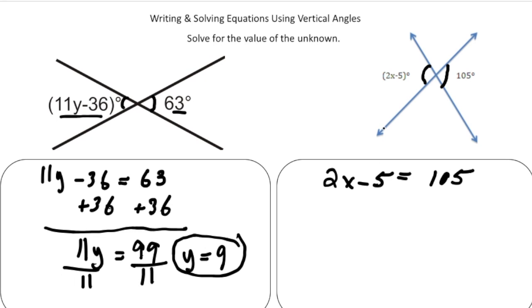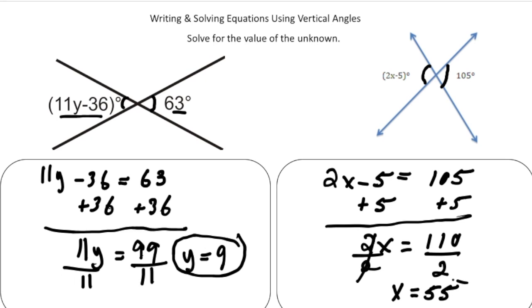And then to solve for X, we're going to add 5 to both sides. Add 5. So now we get 2 times X equals 110. And then divide both sides by 2. And 110 divided by 2 is 55. And there's our solutions.